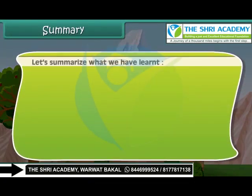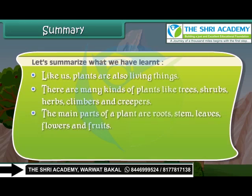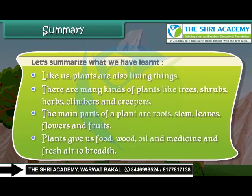Now friends, let us summarize what we have learned so far. Like us, plants are also living things. There are many kinds of plants like trees, shrubs, herbs, climbers and creepers. The main parts of a plant are roots, stem, leaves, flowers and fruits. Plants give us food, wood, oil, medicine and fresh air to breathe.